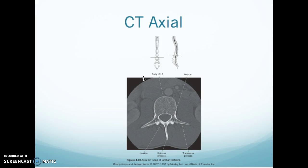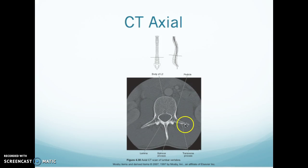Here's a CT axial. You have the body of L2 — you know that because if you count on the little display you can see that you're at L2. You have your body, your pedicle, your transverse process with your lamina, and your spinous process.